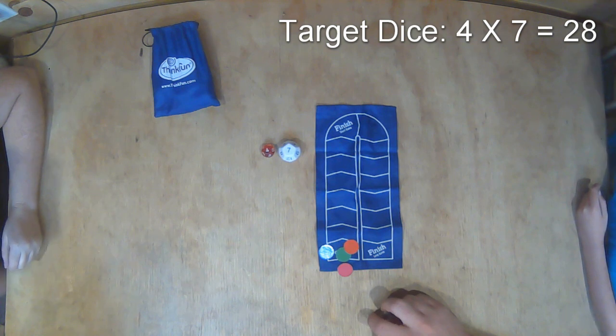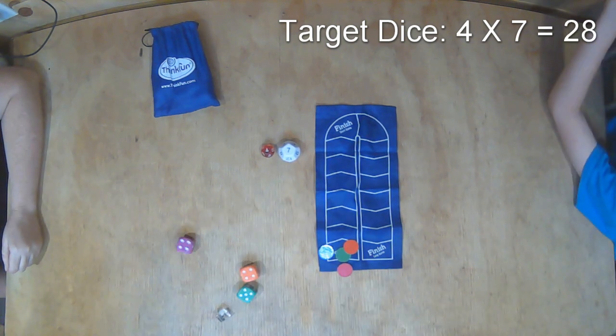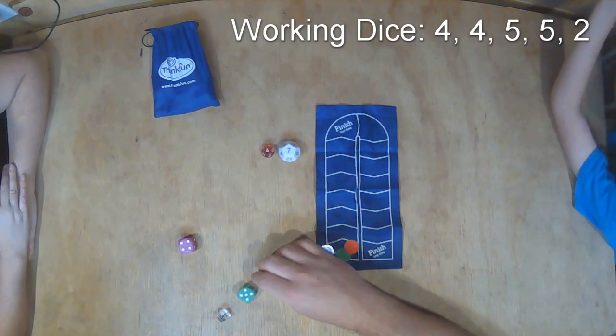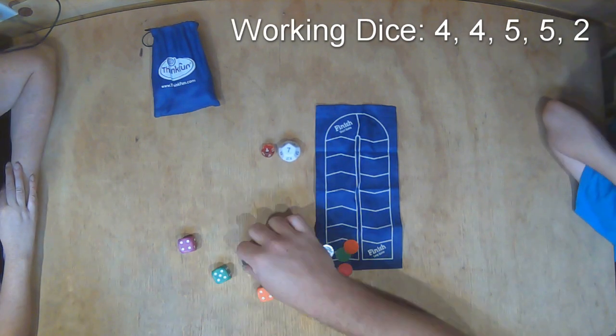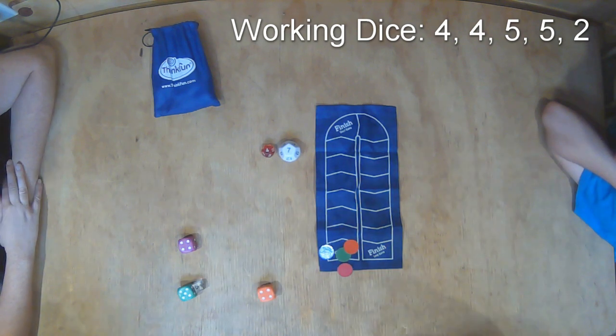Next, they roll all 5d6. Here, Dad rolled two 5s, two 4s, and a 2. The goal now is for Dad to use as many of the d6s as he can to get to the target number.